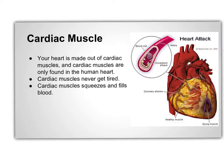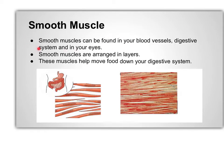Cardiac muscles are involuntary muscles and they work all the time to keep your heart working. Cardiac muscles contract to squeeze blood out of the heart and relax to fill the heart back up with blood. Smooth muscles can be found in your blood vessels, digestive system, and in your eyes. It changes the size of your pupil depending on the amount of light there is. Smooth muscle can operate on its own, which makes it an involuntary muscle. These muscles are arranged in layers, and each layer runs in the opposite direction of the last, which allows the muscles to contract in all directions. This makes it possible for smooth muscles to move food down your digestive system.